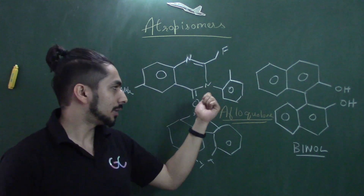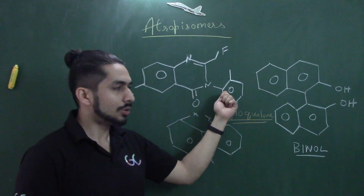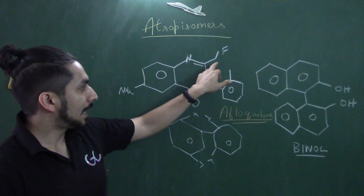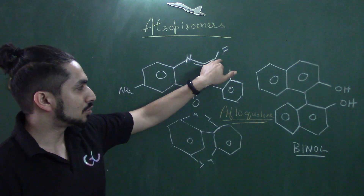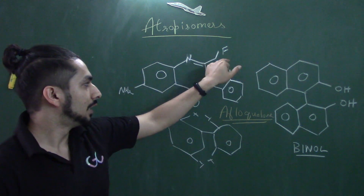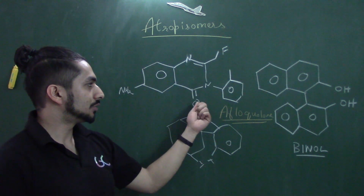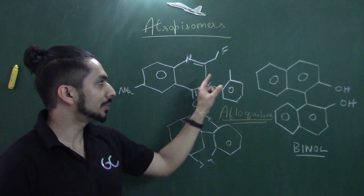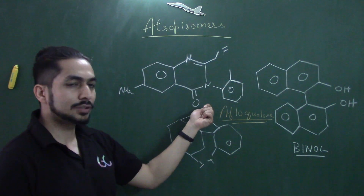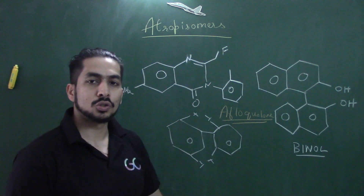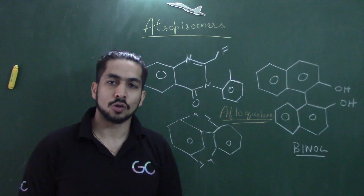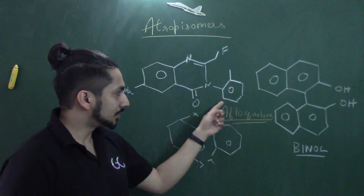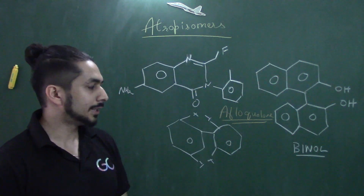When we talk about atropisomerism, it's not just carbon-carbon single bonds but also bonds involving heteroatoms. In aflocolon, there is a nitrogen-carbon single bond. We have a methyl substituent at one position, a CH₂F group at another, and an oxygen on this side. This bond will be hindered because of the CH₂F and the oxygen, so this molecule also shows atropisomerism — hindered rotation that makes this system chiral.